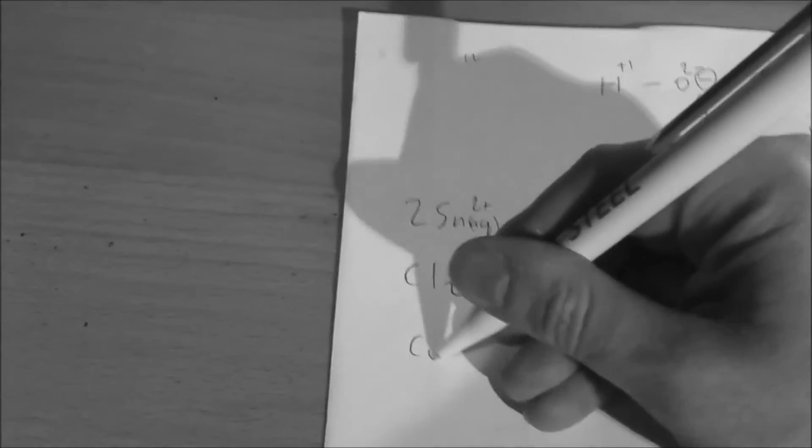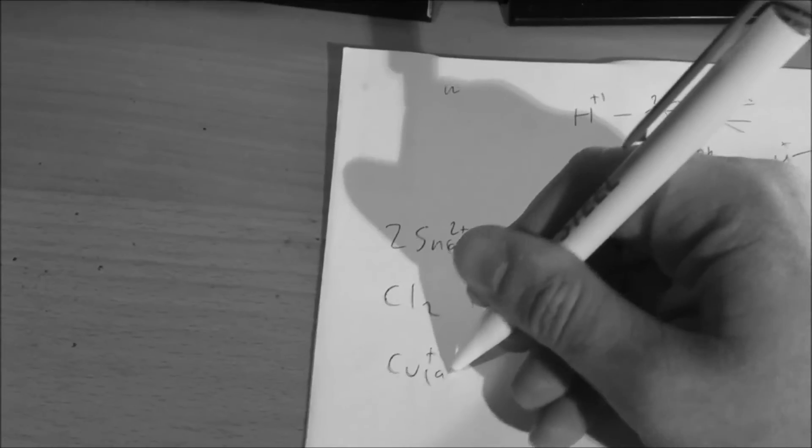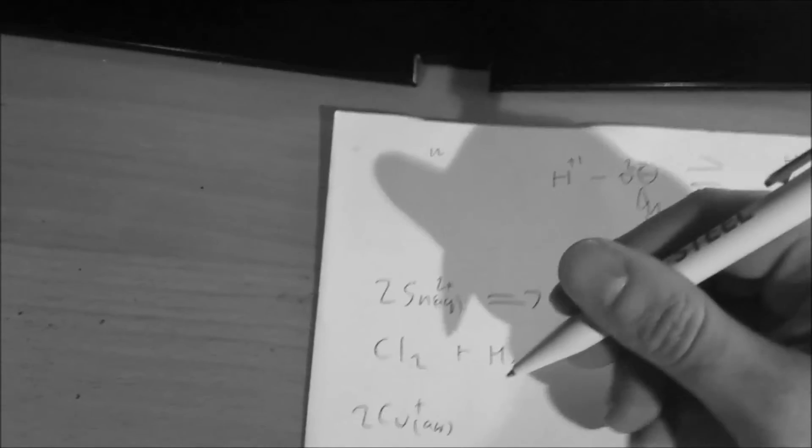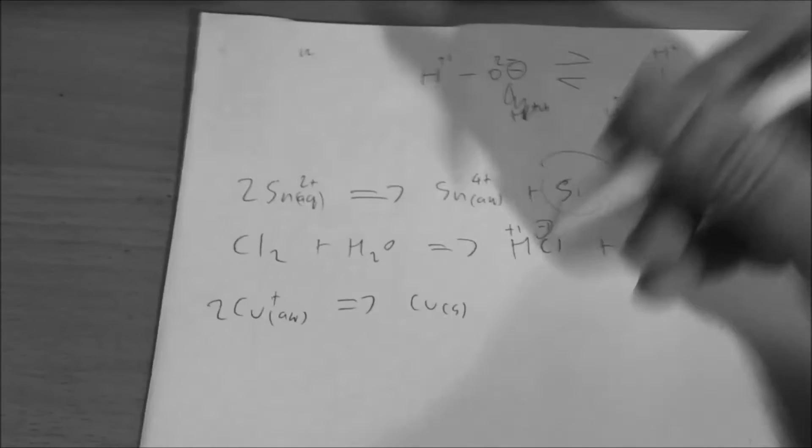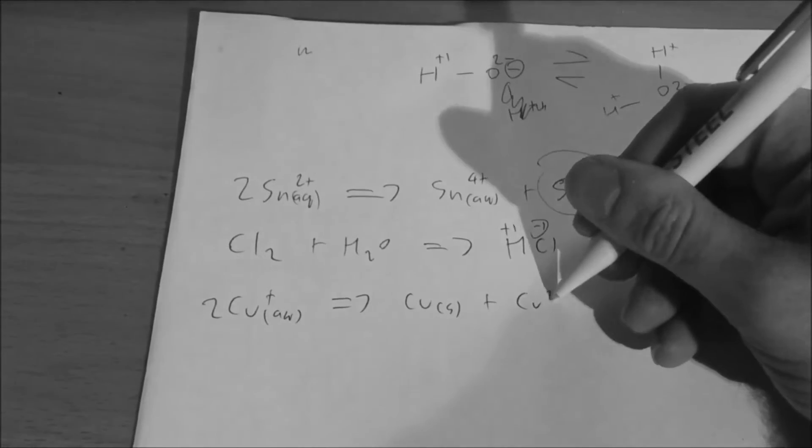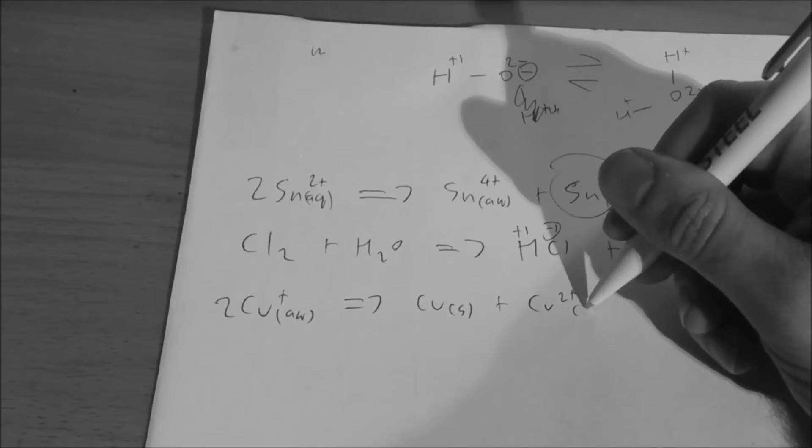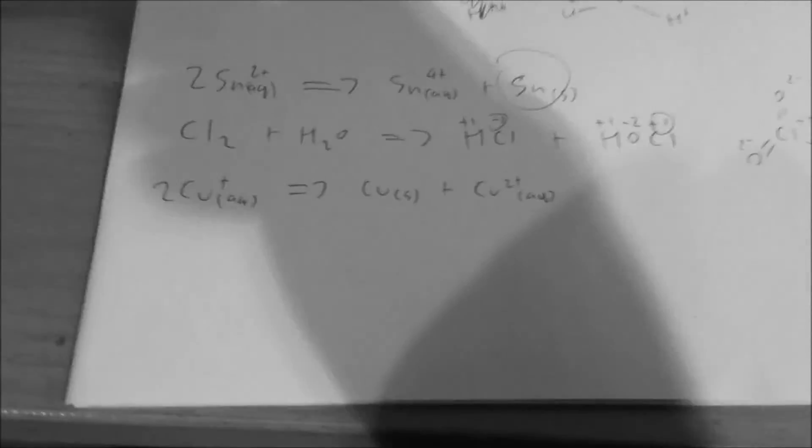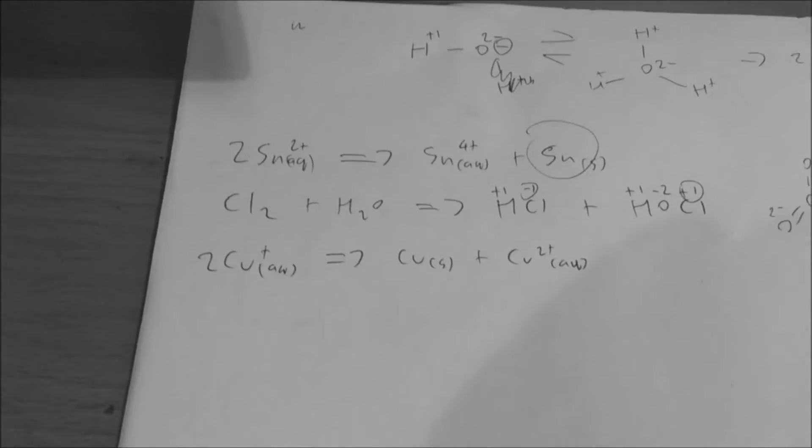And similarly, this is a fairly well-known one, copper plus, so Cu plus in an aqueous environment tends to do the same thing as tin, where it forms copper metal and Cu2 plus. But for certain elements or compounds, the reverse can happen.